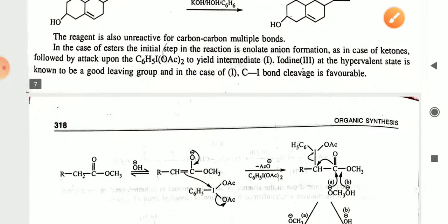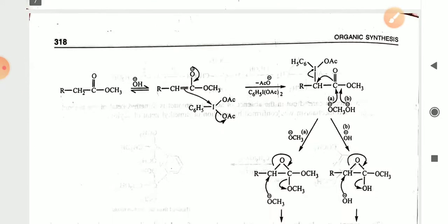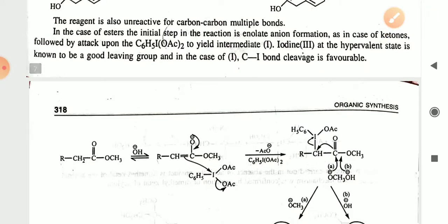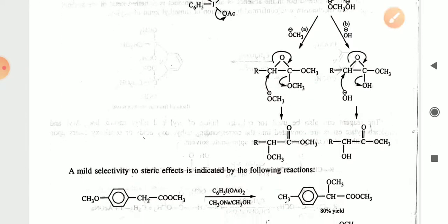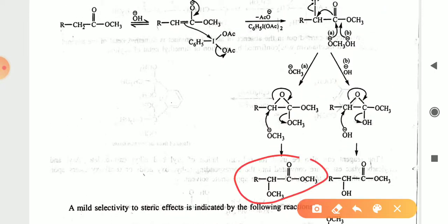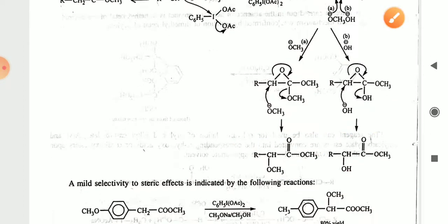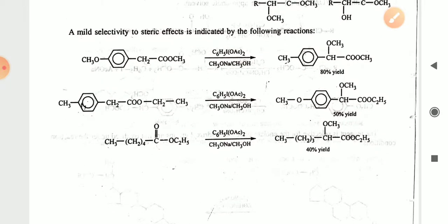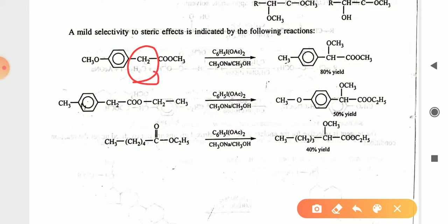This reagent is unreactive toward carbon-carbon multiple bonds in the case of the ester. The initial step of the reaction is enolate ion formation, as in the case of the ketone, and the enolate will be attacked by C₆H₅I(OAc)₂ to yield intermediates first and second. Here you can see the mechanism: the reagent attacks and gives the intermediate first and second, and finally the product forms from both reactions. Under mild conditions, the reagent attacks the CH₂ group by adding the OCH₃ group.